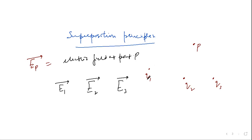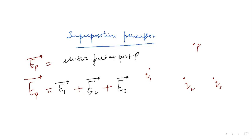Find the electric field at point P due to q3 (assuming q1 and q2 are absent), let that be E3. Then the net electric field at point P, E_P, will be equal to the vector sum of these three fields: E1, E2, and E3. This idea is called the superposition principle, and it is valid for any number of charges. If there are n charges, the sum will contain n terms: E1, E2, E3, E4, up to En.